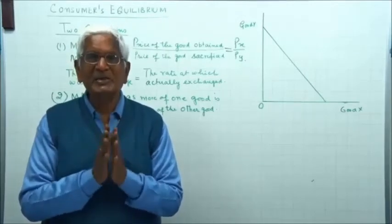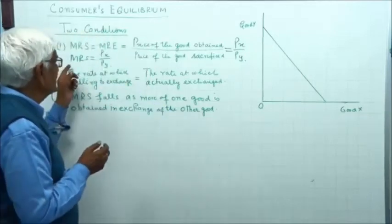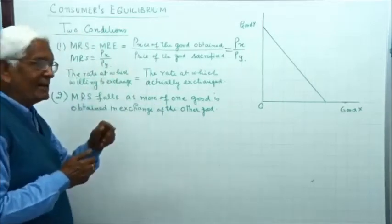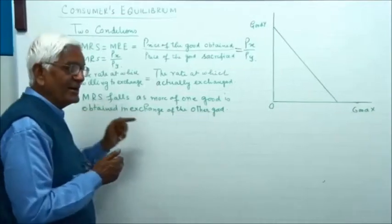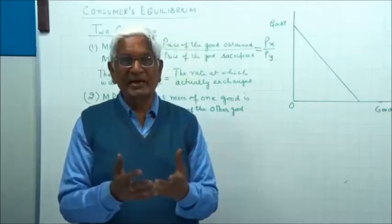So explanation simply means: what will happen when MRS is not equal to MRE, and what will happen if MRS doesn't fall?